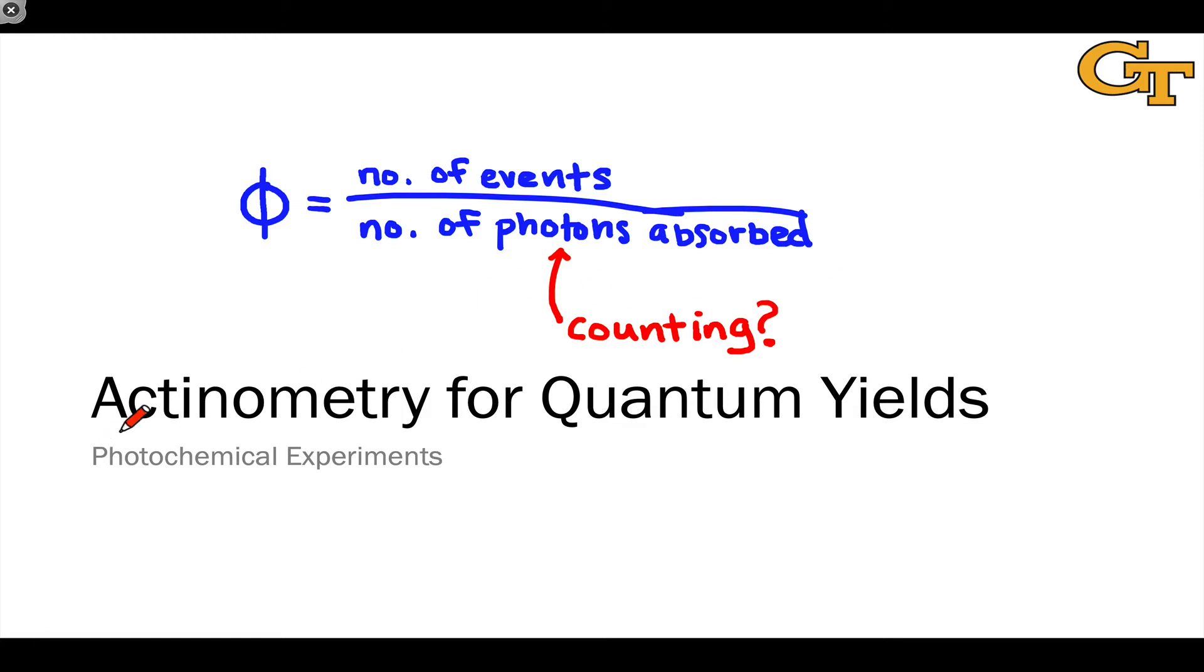One strategy for doing this involves taking advantage of chemical systems where the quantum yield is very precisely known. Those are called actinometers, and the practice of using those to measure quantum yields is called actinometry.